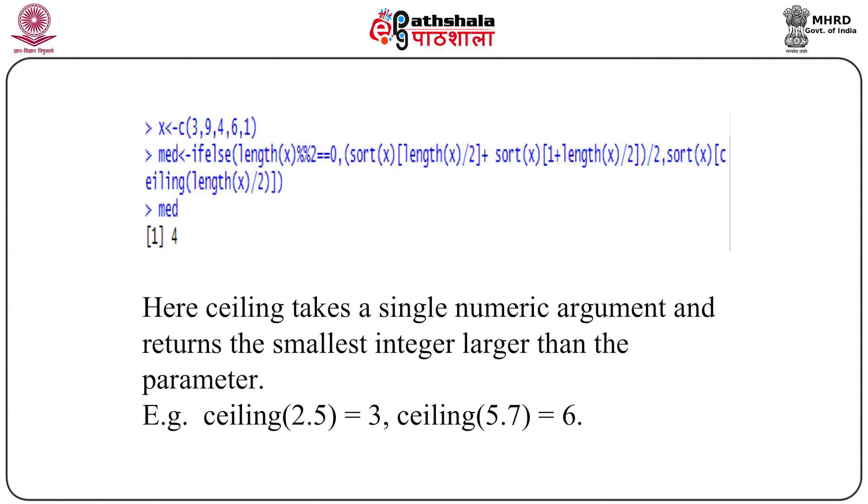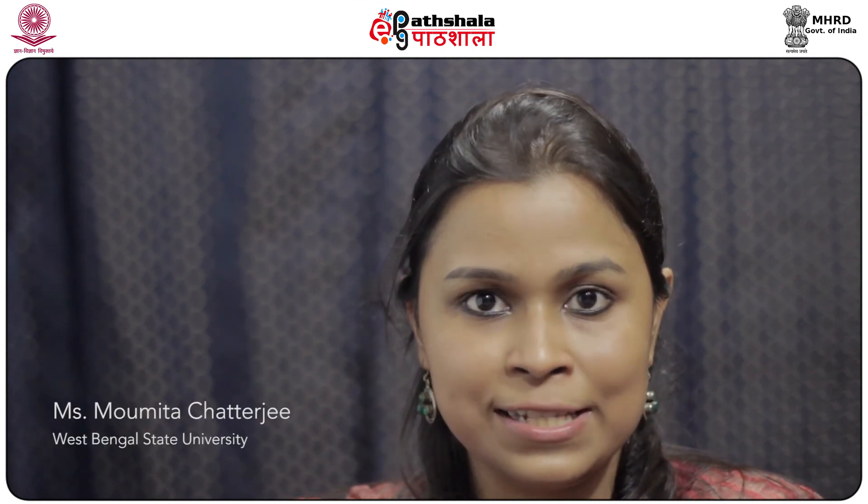We have already discussed a number of different kinds of examples here, so let's stop here. More examples will be discussed in the next module. From this discussion, we now have some basic ideas about the structures of the if-else statement, the basic operators used in R programming, how to calculate the median of a sample, and how to find odd and even numbers. This discussion will continue in the next module, which will also cover detailed examples of the switch statement.